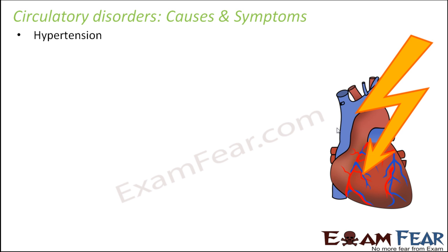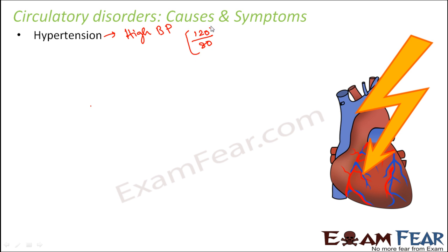Hypertension is often referred to as high BP, that is high blood pressure. Whenever the blood pressure is greater than normal — depending on the age of the patient — the normal blood pressure is taken as 120/80. If the blood pressure is more than this, the patient is said to suffer from hypertension or high blood pressure.